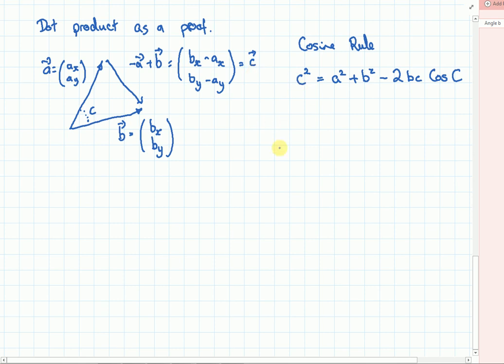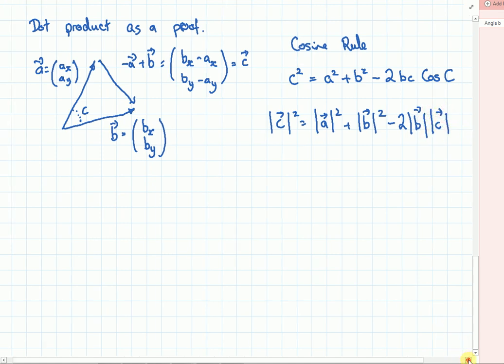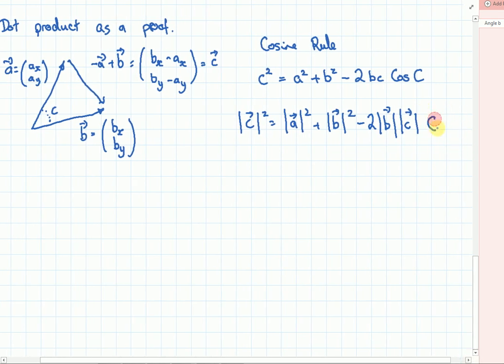Turn it into a vector form. So this is the modulus of C squared is the modulus of A squared plus the modulus of B squared minus 2 times the modulus of B, modulus of A times the cos of C. And these two I'm not too worried about because these actually wind up in our division part.